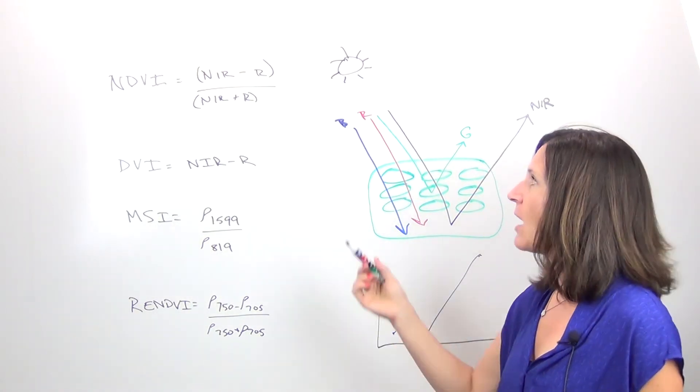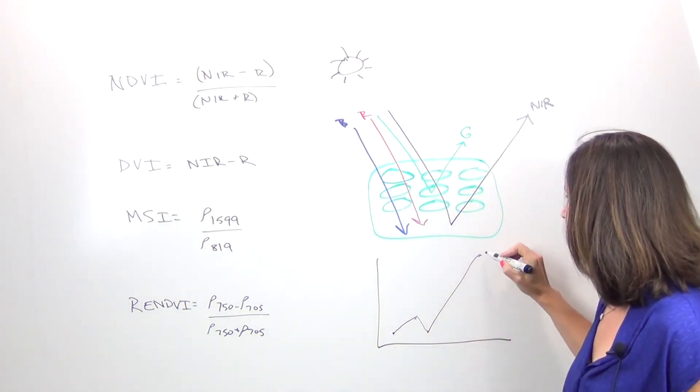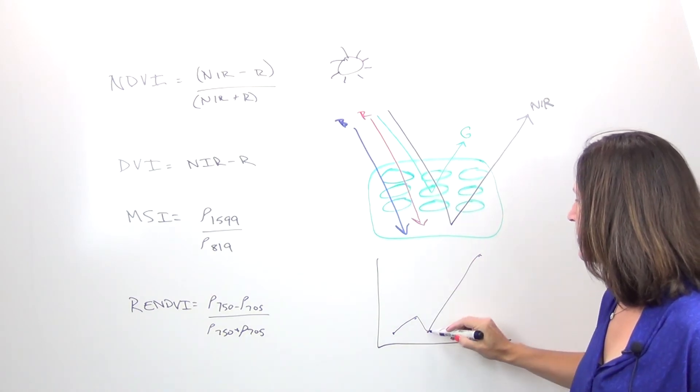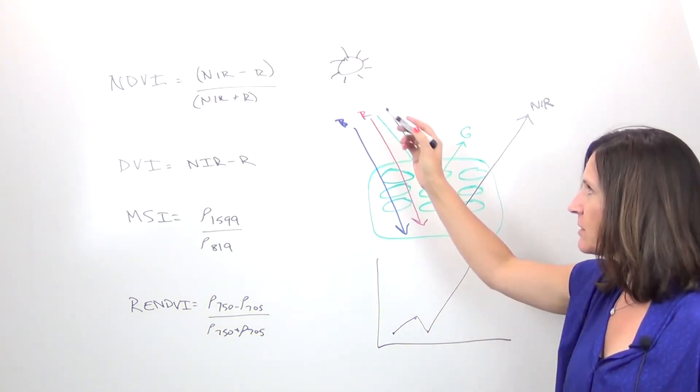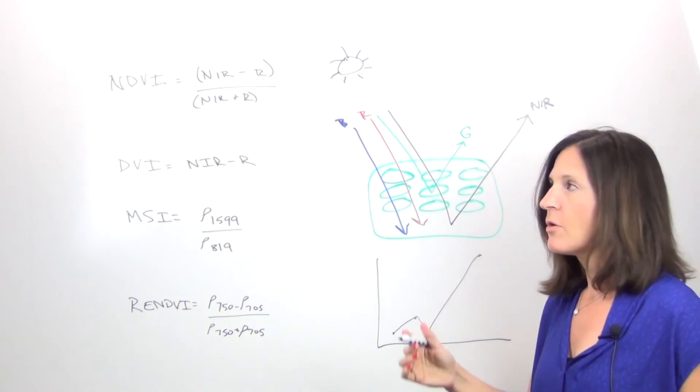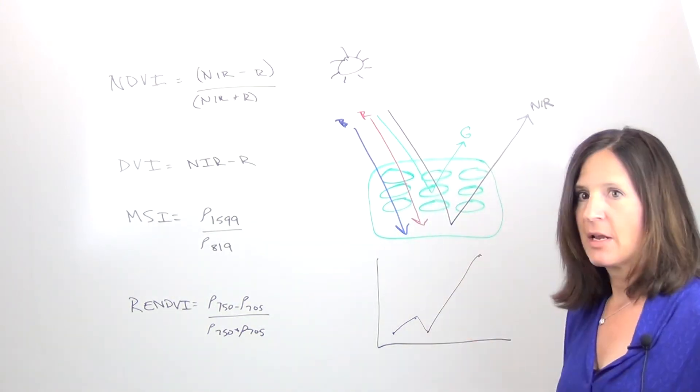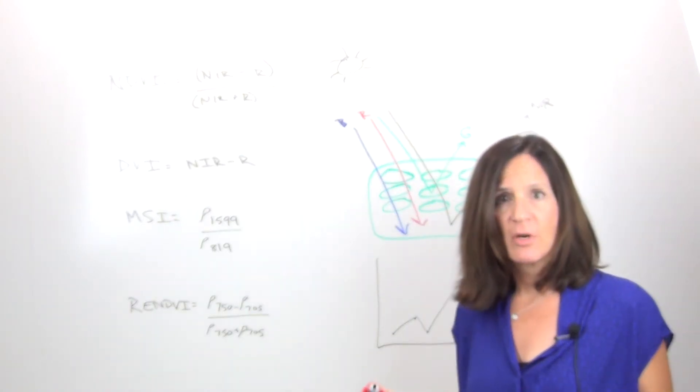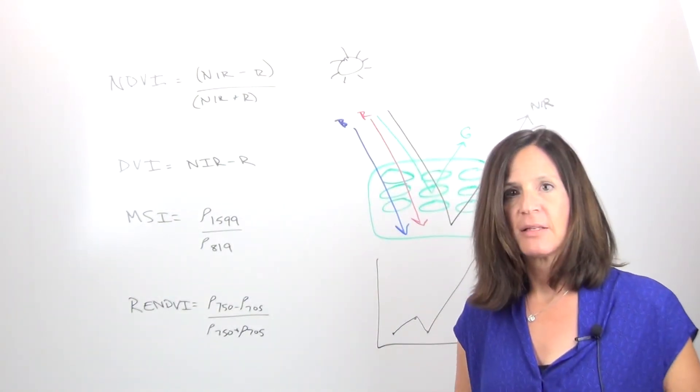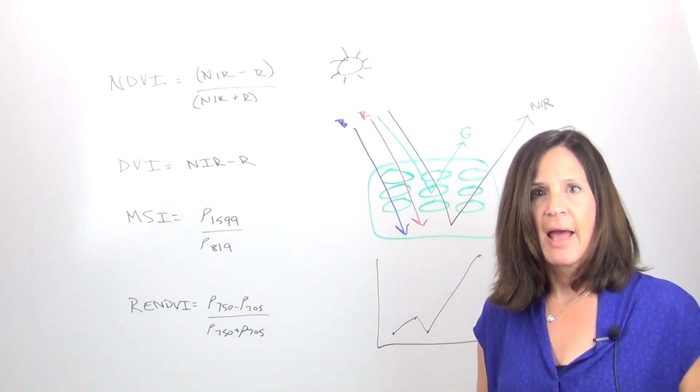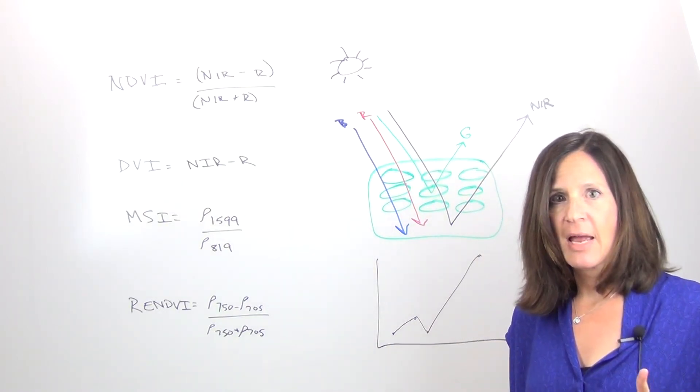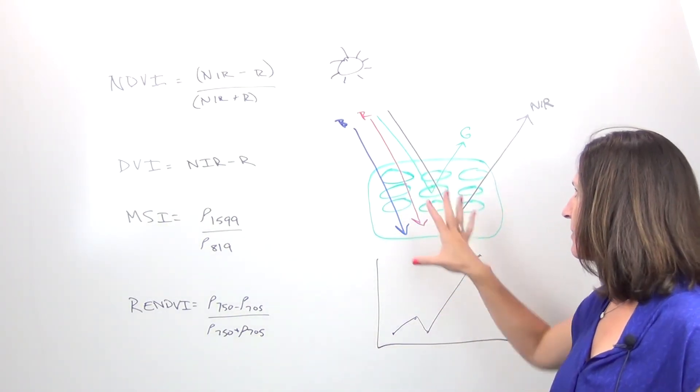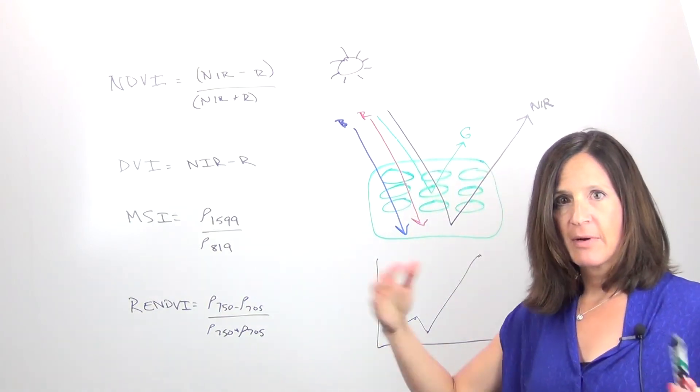And NDVI is commonly used to take the near infrared values out here minus the red values way down here and look at those relationships, normalize it, where we get really high values that indicate healthy vegetation. Well that's tried and true. It's been tested and it works really great, but there's some other ways that you can utilize the data you might already have to look at different types of relationships between what's happening from the light when it hits the plant.